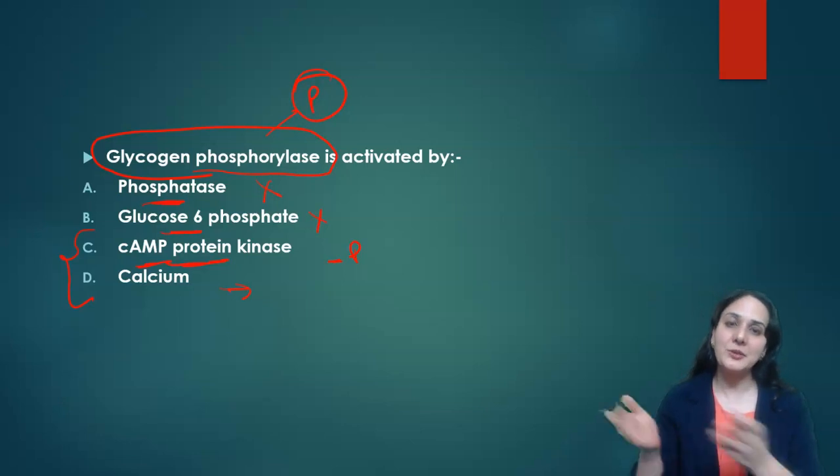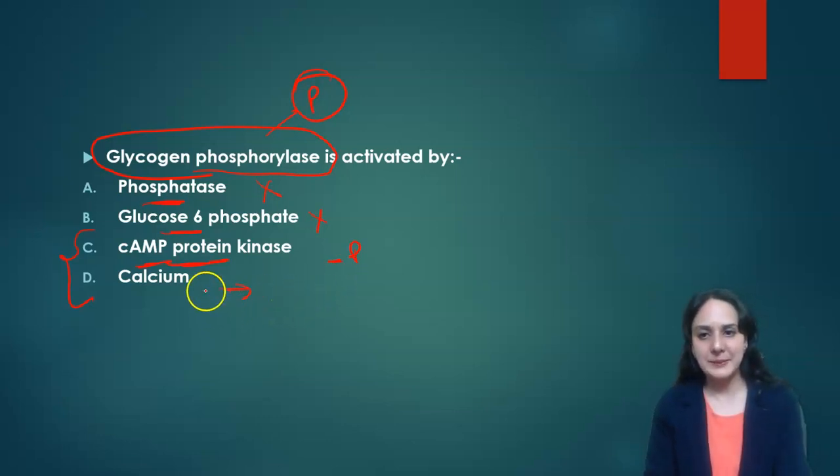Epinephrine will increase cyclic AMP. Whereas calcium is direct activator of the glycogen phosphorylase. So when calcium level increases it activates glycogen phosphorylase. So calcium is the better answer, whereas cyclic AMP protein kinase is a mediator only. It is not direct.